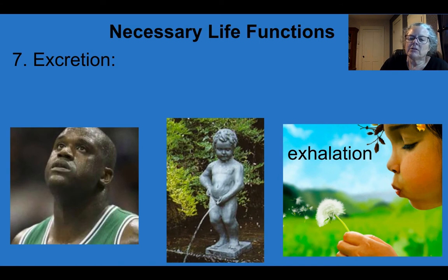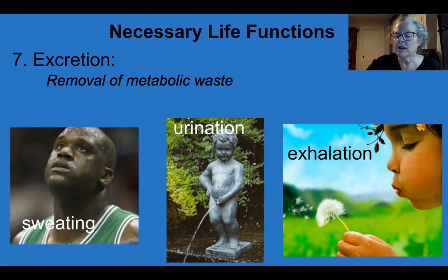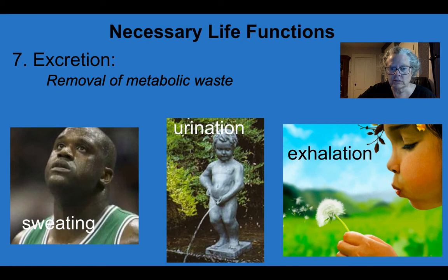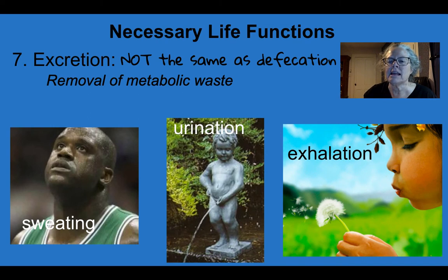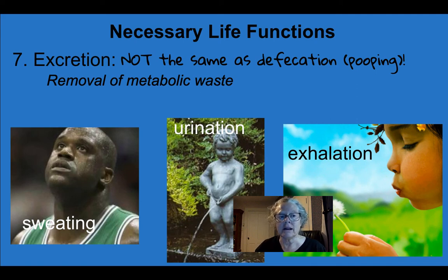The next one is excretion. The three primary ways that we excrete stuff is through sweating, urination, and exhalation. Excretion means what you're getting rid of are products of chemical reactions — metabolic waste. Excretion is not the same as pooping. Are there some excretory components to poop? Yes — old red blood cells and some other stuff. But what you release during a bowel movement is not stuff that was ever used for a chemical reaction in your body, so pooping is not excretion.